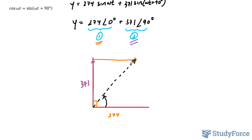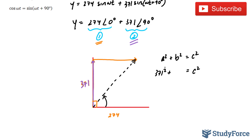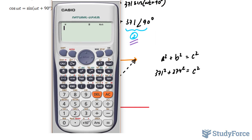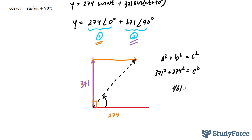We can do that using A, the Pythagorean theorem, to find the magnitude, and B, trigonometric functions to figure out the angle. Starting with the Pythagorean theorem: a squared plus b squared equals c squared. This resultant represents our c. We have 371 squared plus 274 squared. Taking the square root: the square root of 371 squared plus 274 squared gives us 461.2. Given that these both have three significant figures, our magnitude is 461.